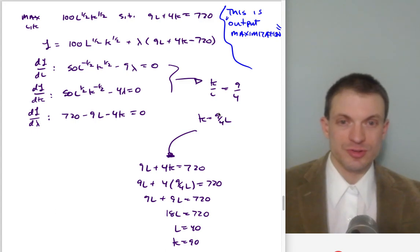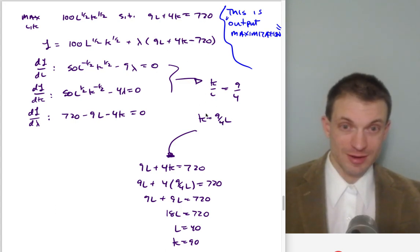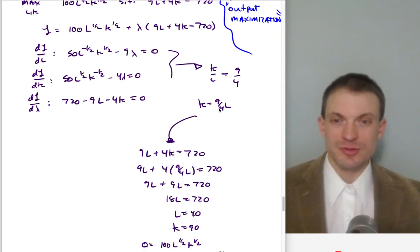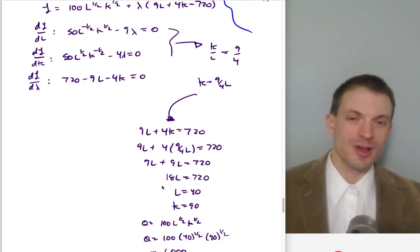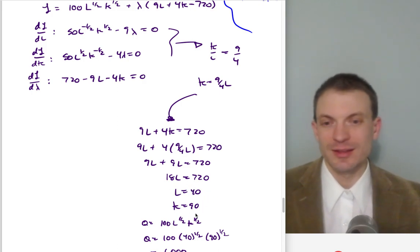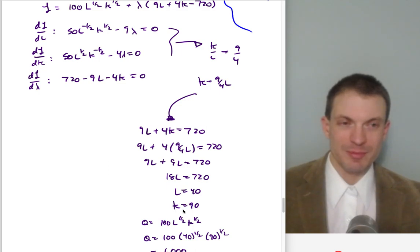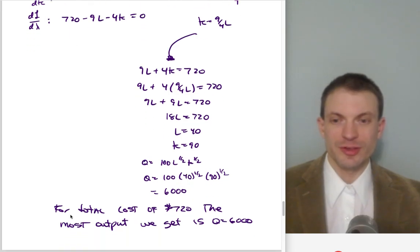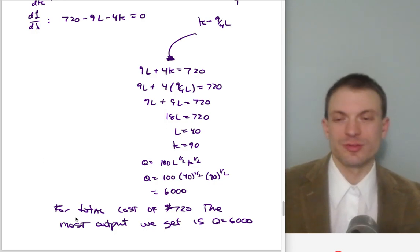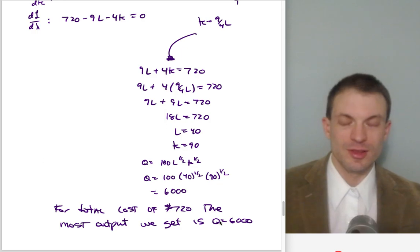The tangency condition remains the same because the derivatives are the same. We substitute the tangency condition into the budget constraint: 9L + 4·(9/4)L = 720, which simplifies to give L = 40 and K = 90. Evaluating the production function at these values gives 6,000 units of output — that's the most output achievable for a total cost of $720.